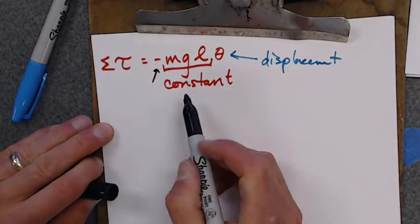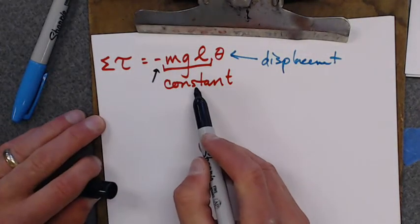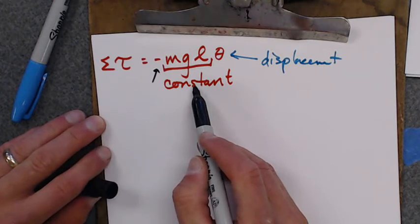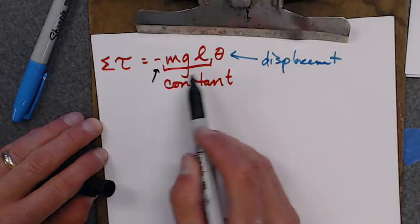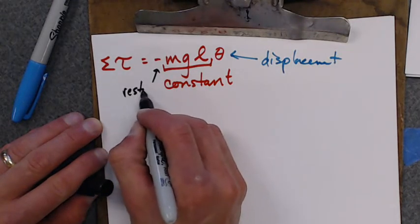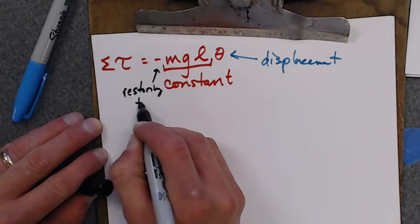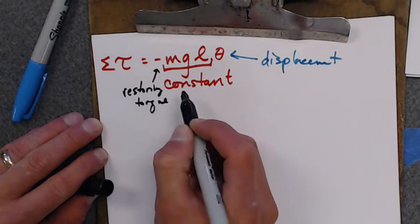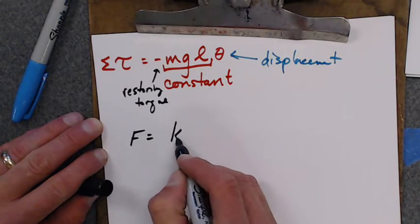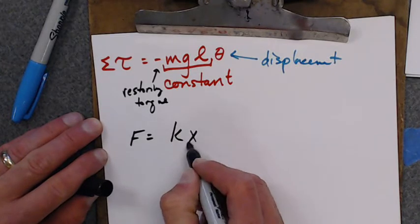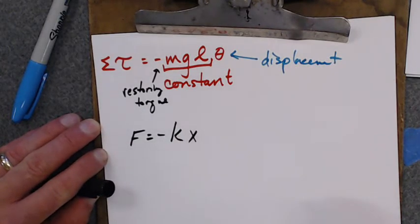And now I have also this negative sign up here. Where else have I seen a negative sign with a constant that depends solely on the situation, and then based on the displacement, that negative sign means it's a restoring torque. That sounds familiar. Where else have I got some constant times some displacement that's in it.